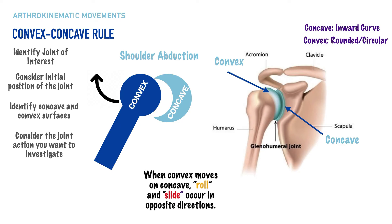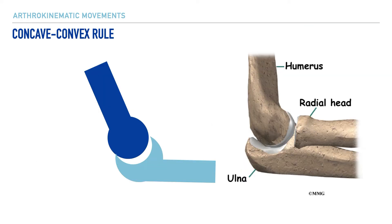When the convex structure moves on the concave, the arthrokinematic movements of rolling and sliding occur in opposite directions. The rolling motion occurs up and out, and as a result the sliding motion occurs in the opposite direction — down and in. Now let's take a look at the concave-convex rule.